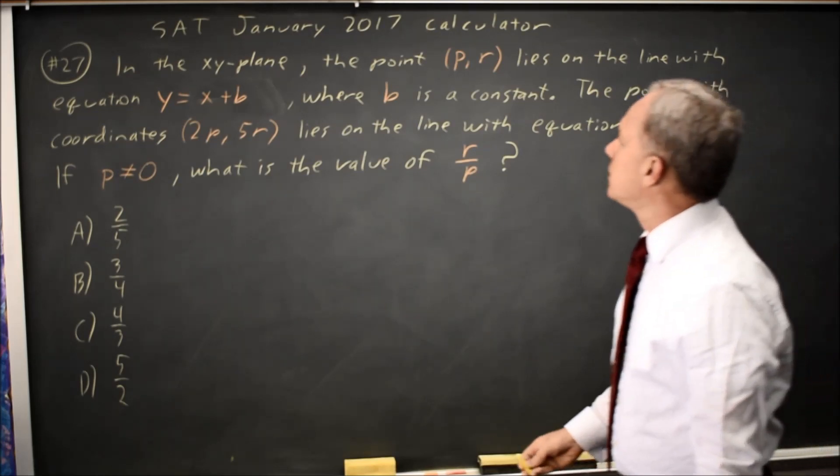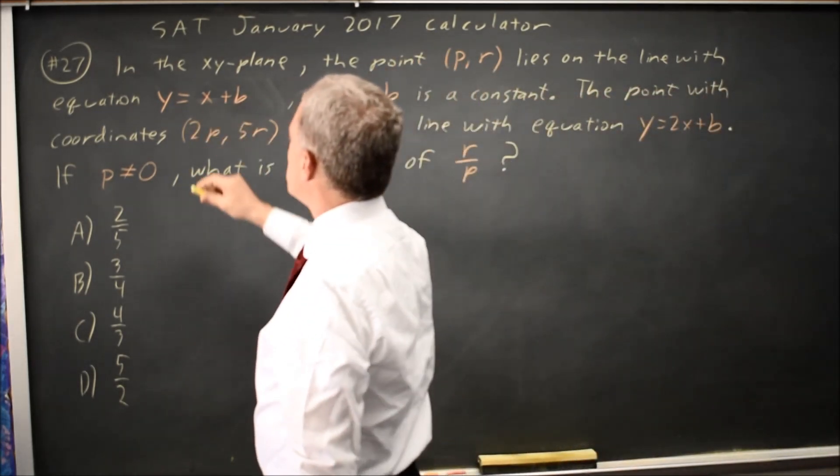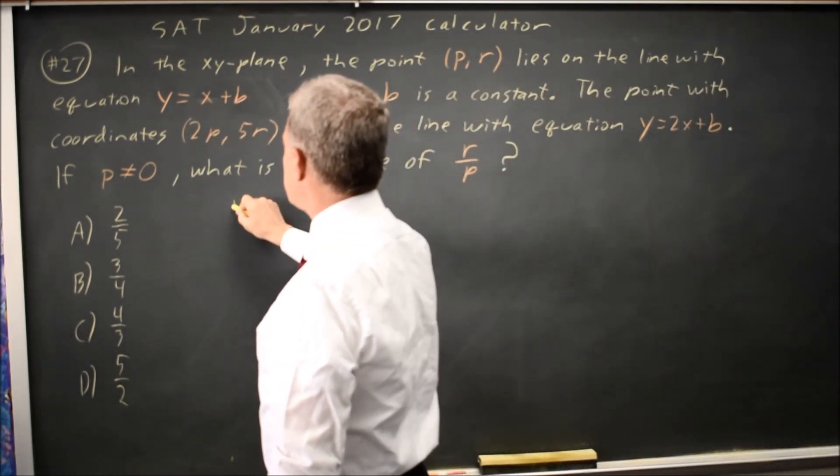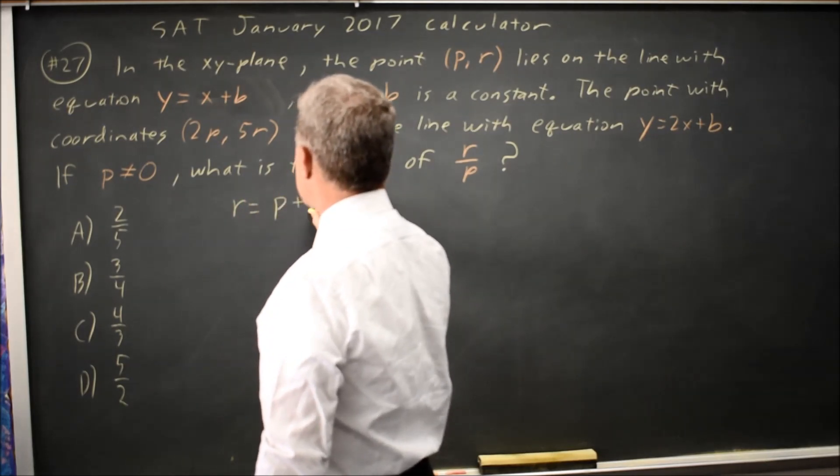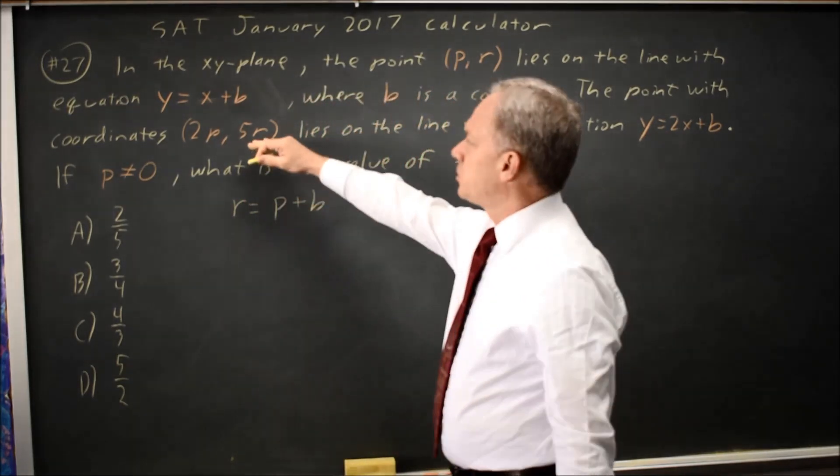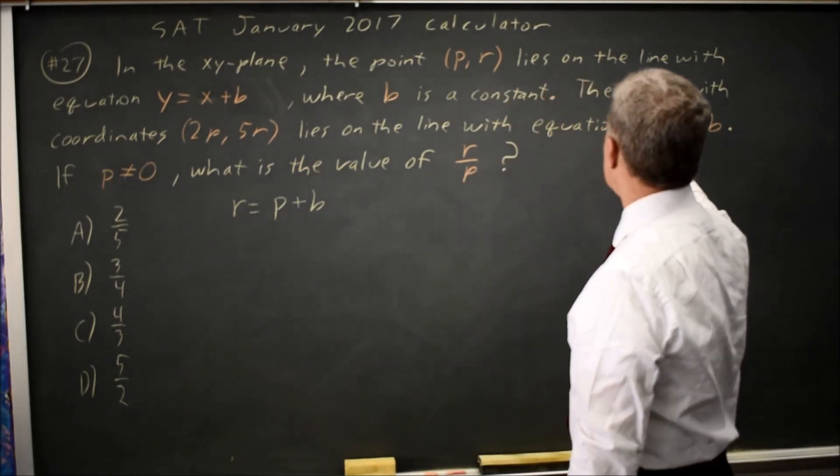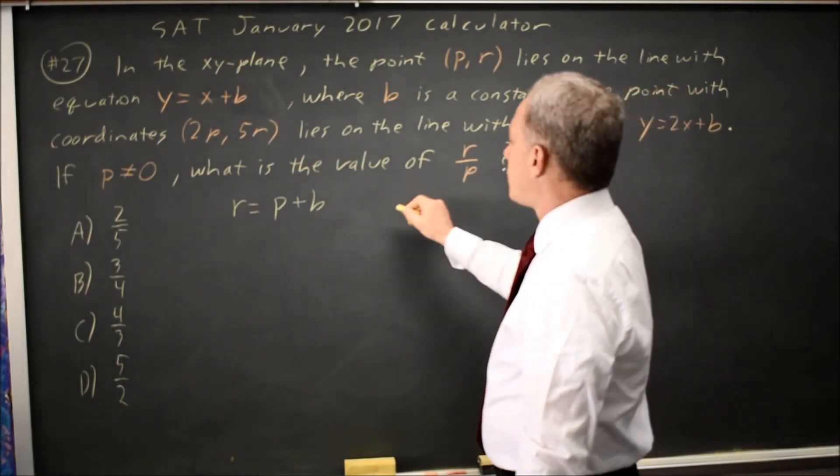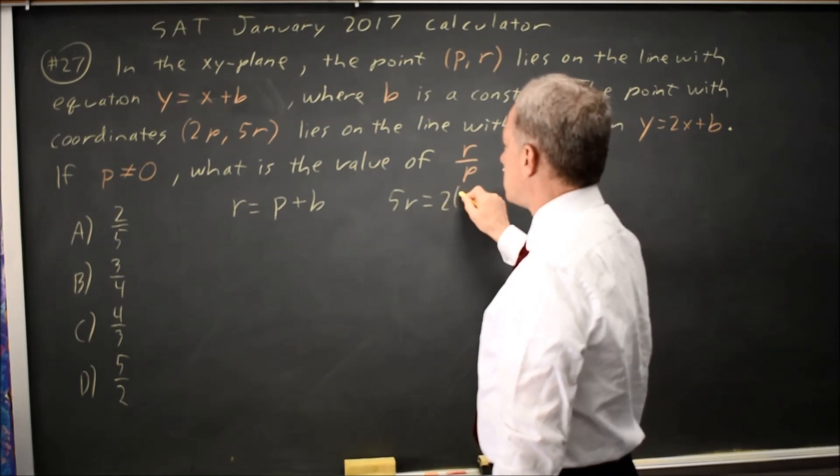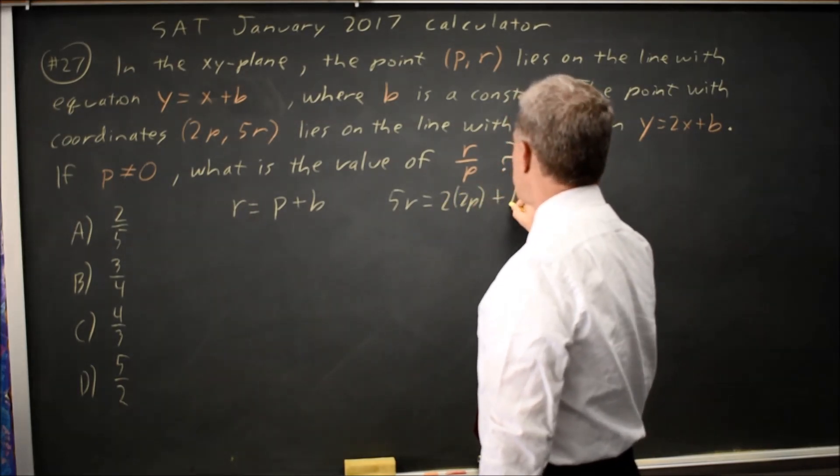Since the point (p,r) is on y equals x plus b, the y value r is equal to x value p plus b. And since the point (2p, 5r) is on y equals 2x plus b, 5r is equal to twice 2p plus b, so 5r equals 4p plus b.